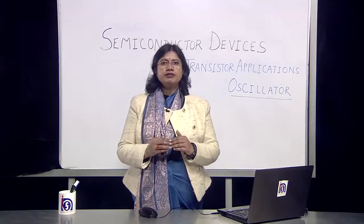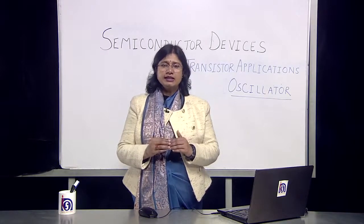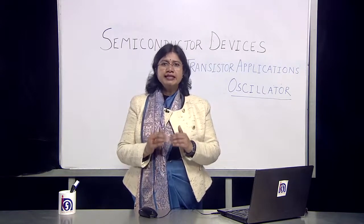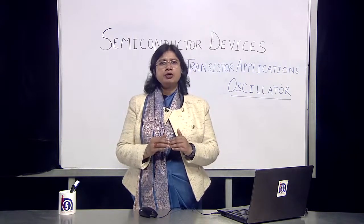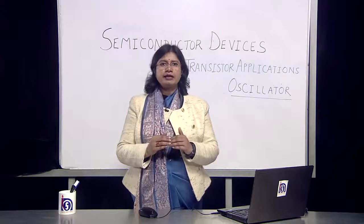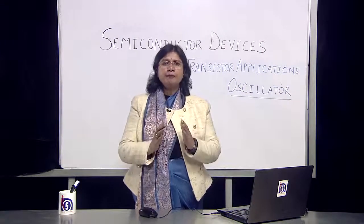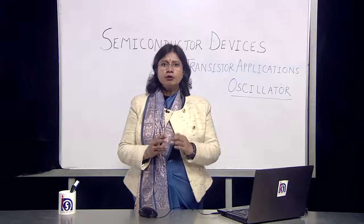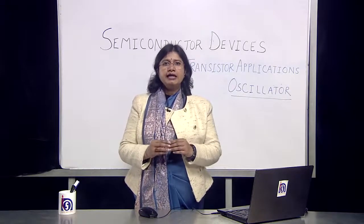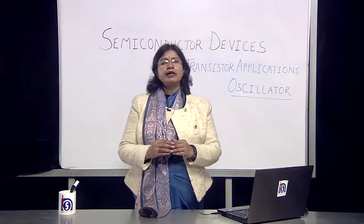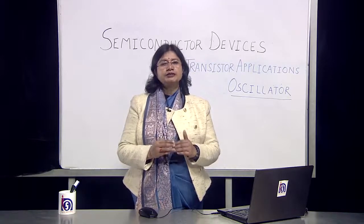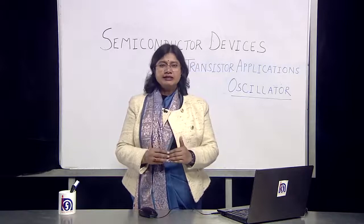We discussed the working of a Cole-Pitts oscillator. In a Cole-Pitts oscillator, we have a simple LC tank circuit which acts as the feedback mechanism. The simple amplifier connected to the feedback mechanism forms a Cole-Pitts oscillator, and there are a number of frequency generators which use transistors as oscillators. Thank you learners.